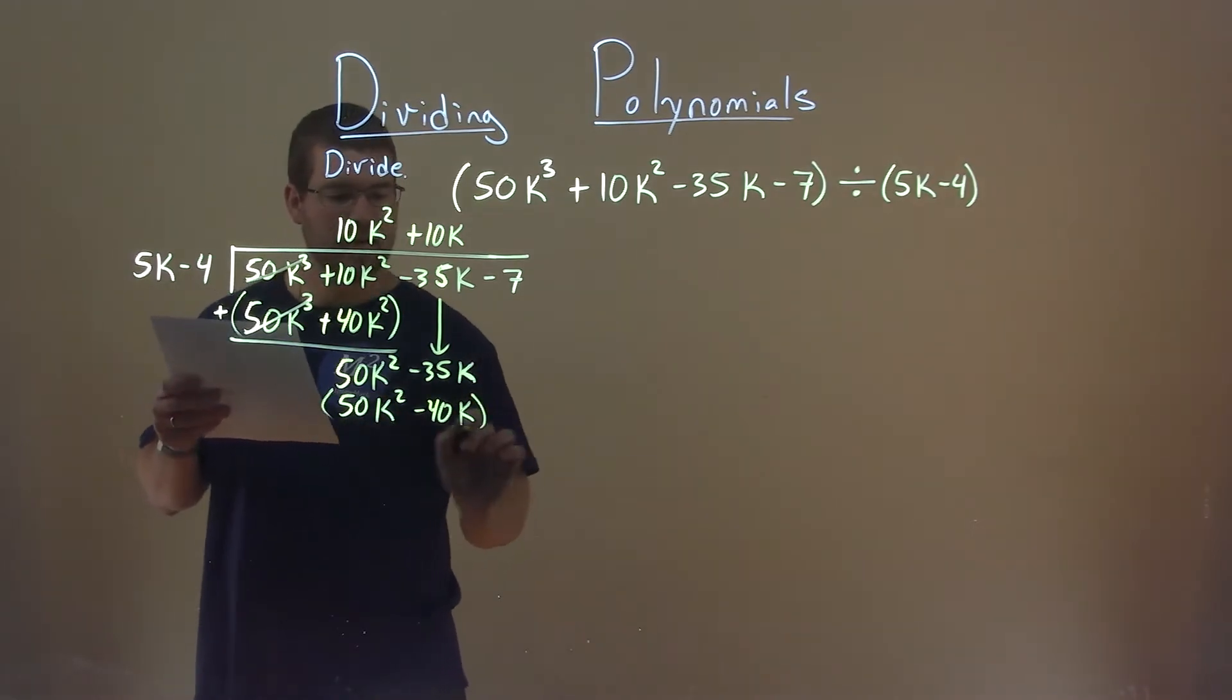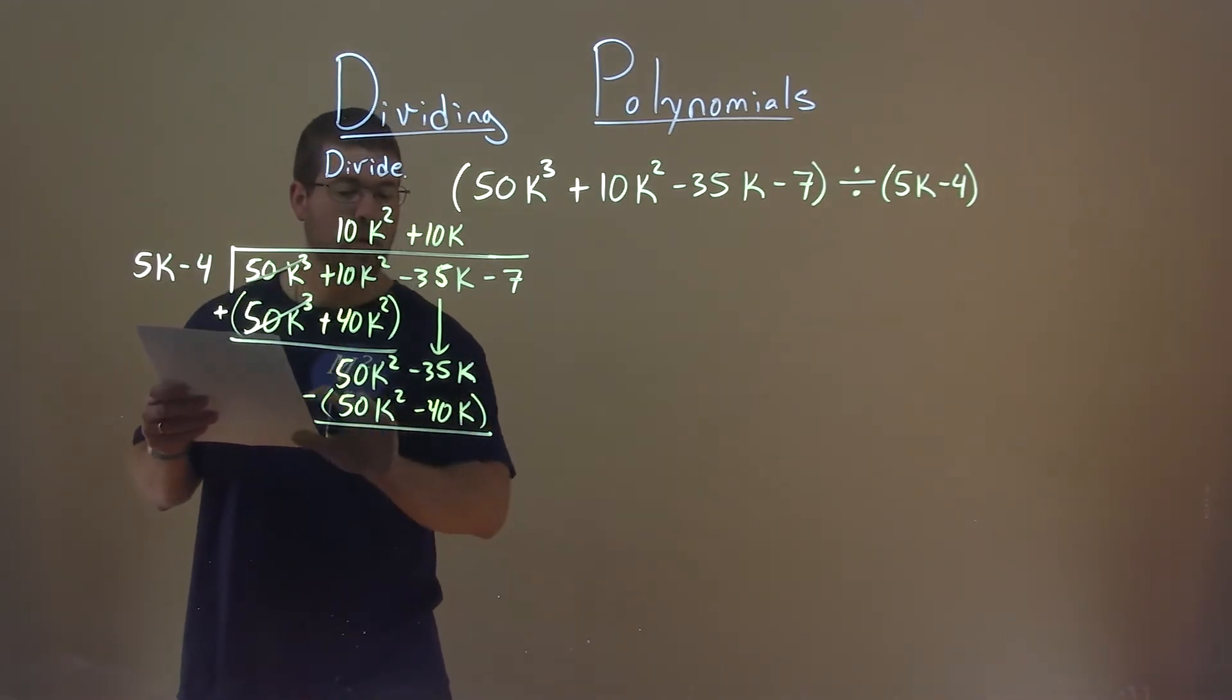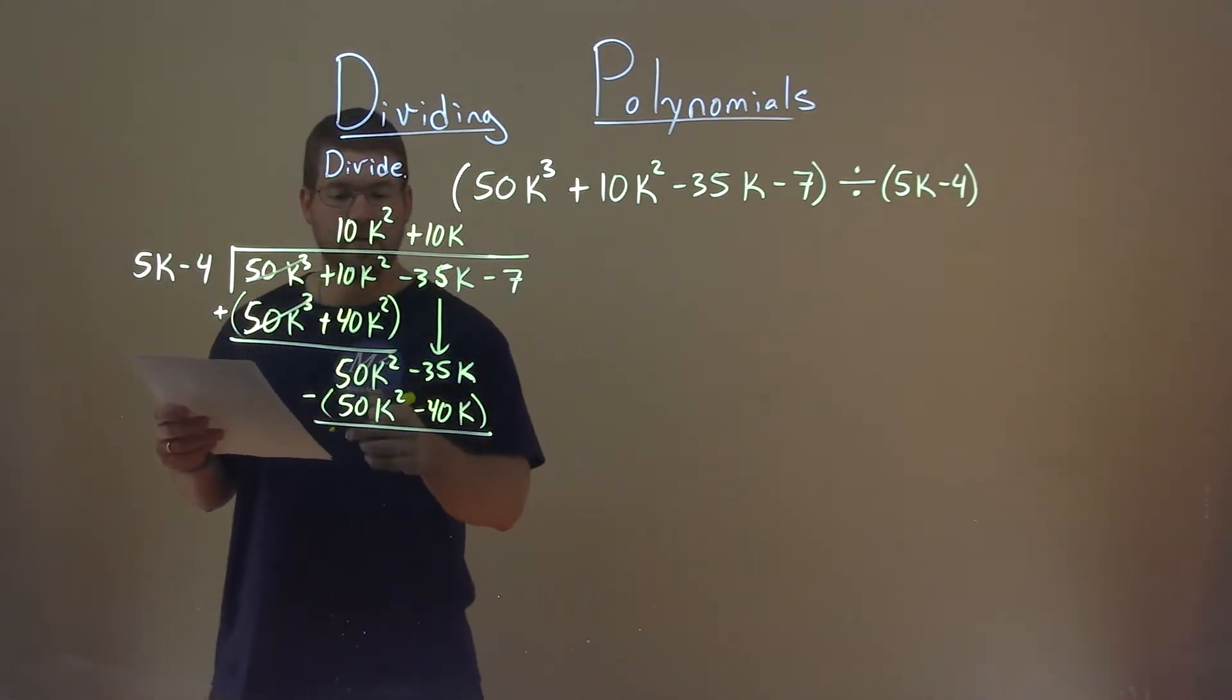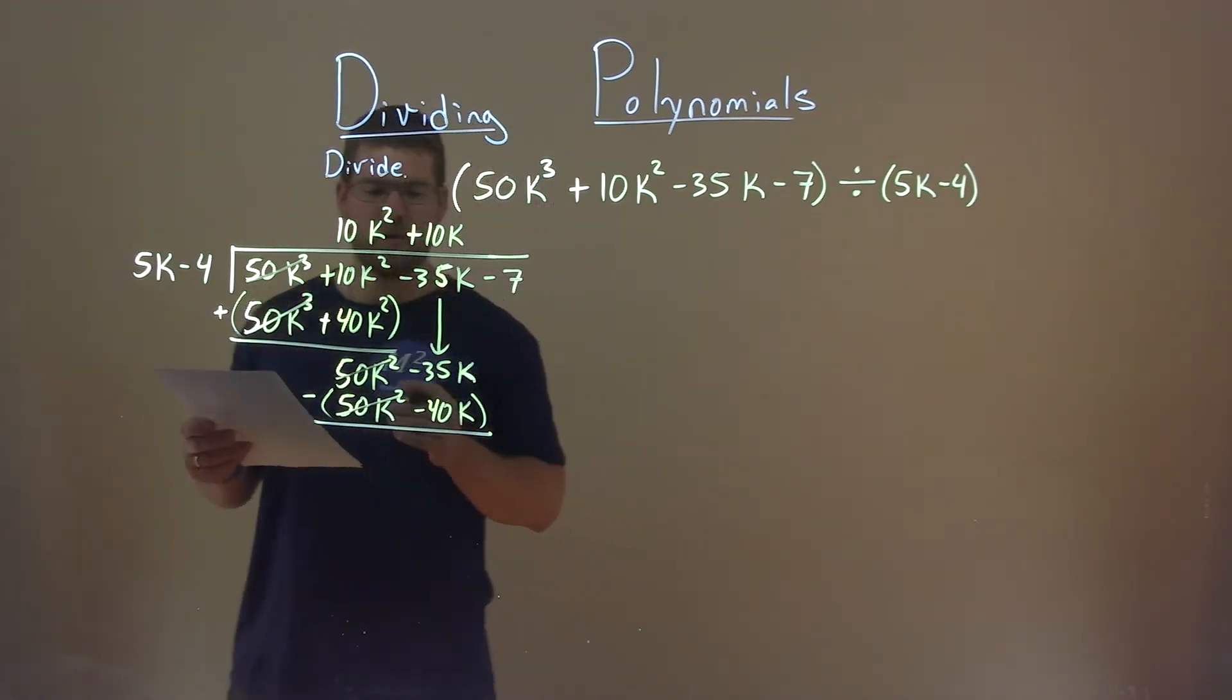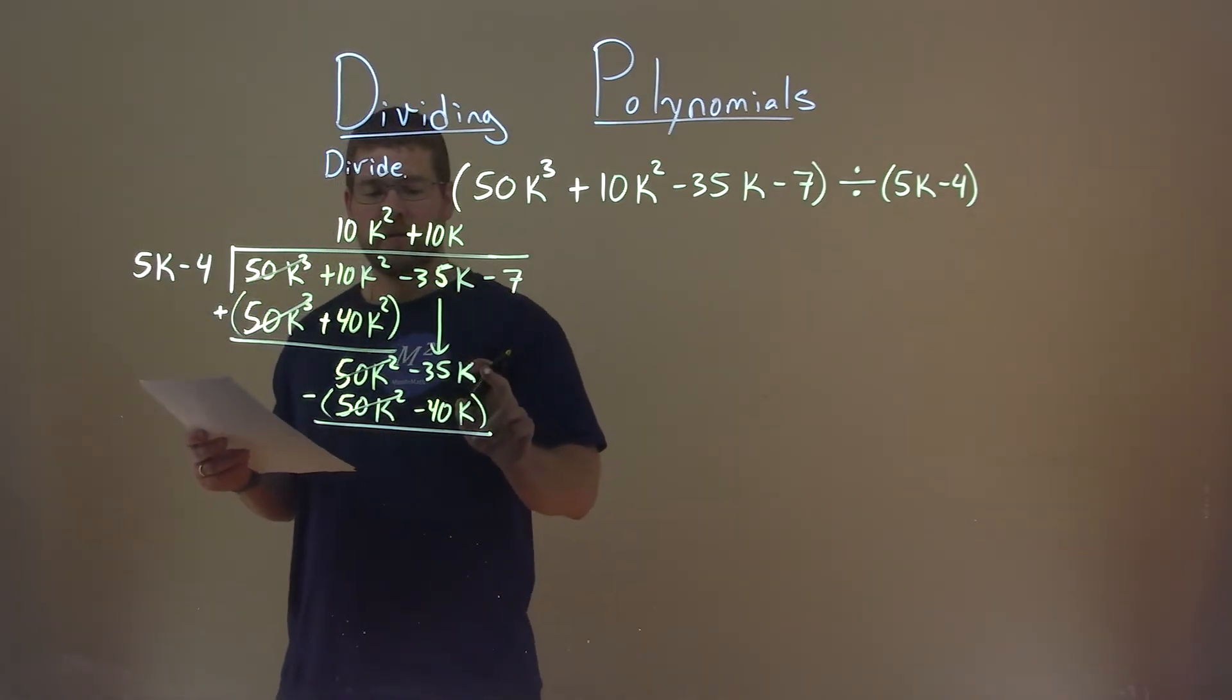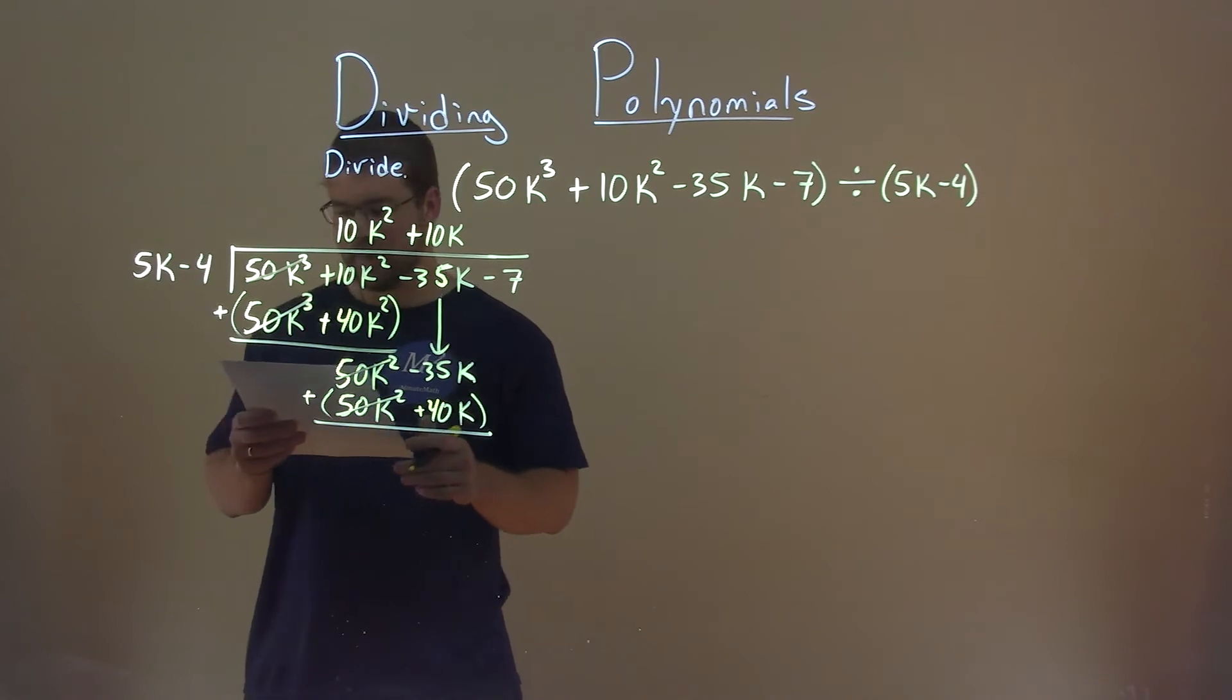Now we're going to subtract the whole thing. Don't forget. 50k squared minus 50k squared. That should cancel. And then you know you're on the right track. Negative 35k minus a negative 40k, or plus a positive 40k, comes out to be a positive 5k.